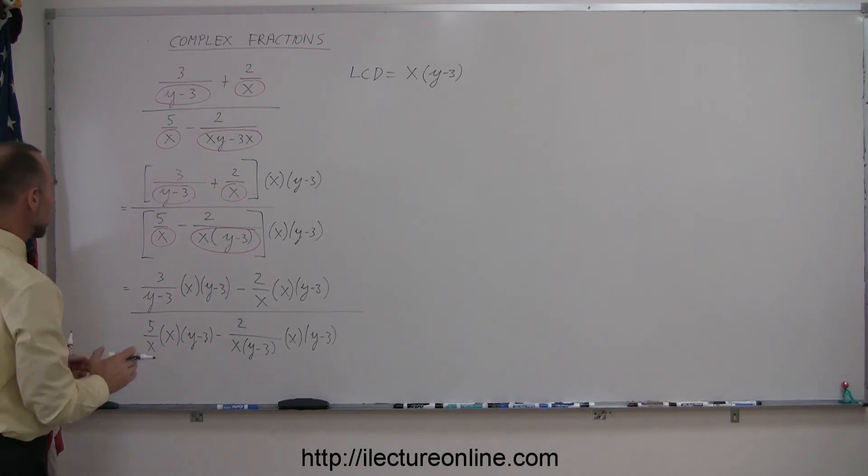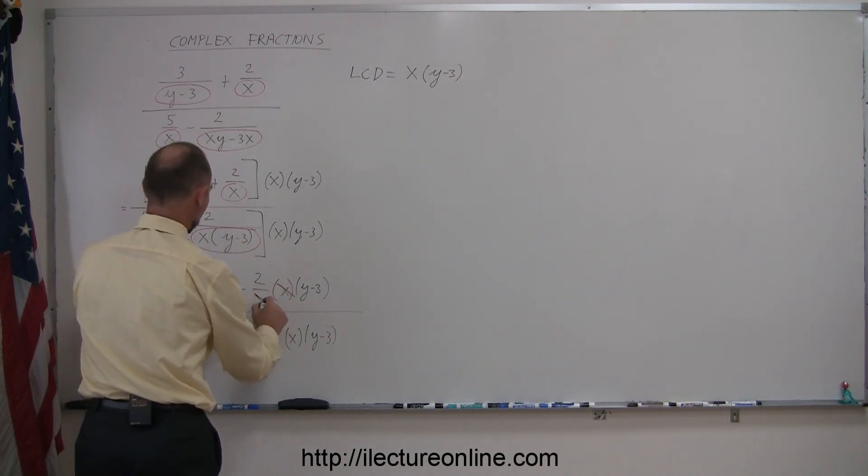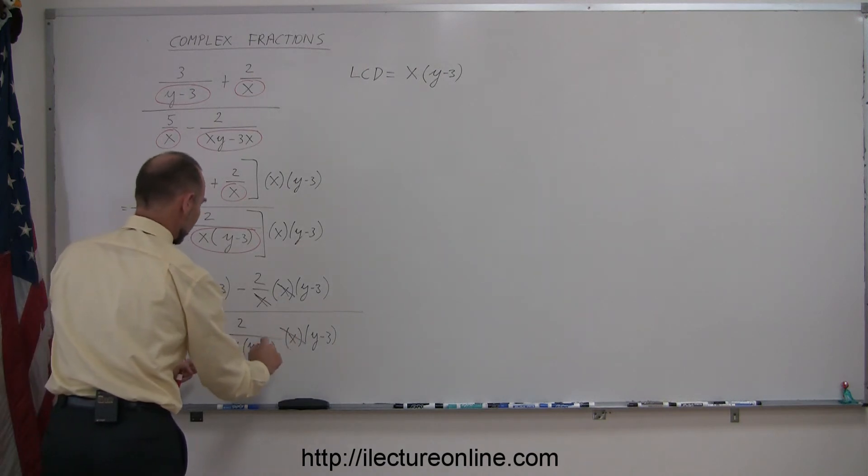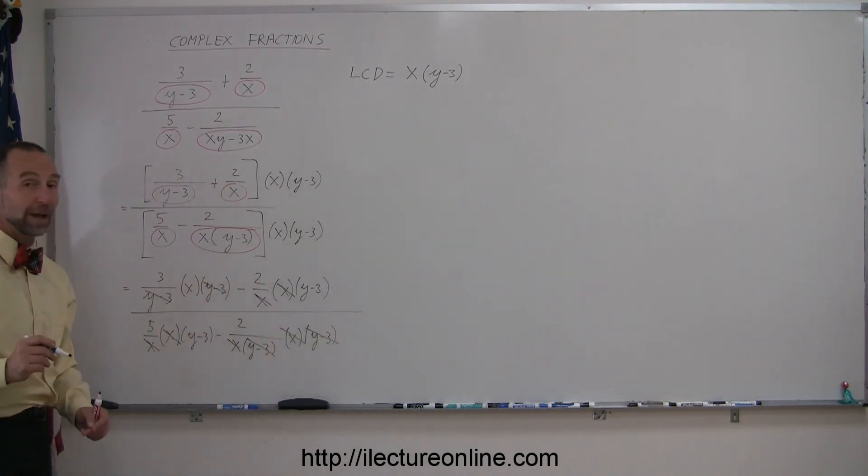Now I can see that here the (y minus 3) cancels out with the (y minus 3), here the x cancels out with this x, here the x cancels out with the x, and here the x cancels out with the x, and the (y minus 3) cancels out with the (y minus 3). And what do I have left over?